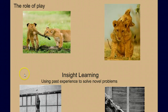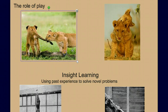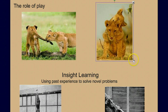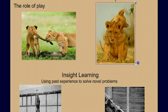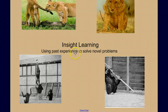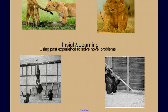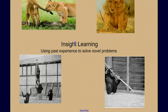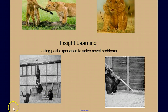We also spent time talking about the role of play — what this behavior might do for animals — basically as practice of adult behavior and for forming social bonds. And we briefly discussed insight learning, the type of learning where past experience is modified to solve some new problem, a form of problem solving.